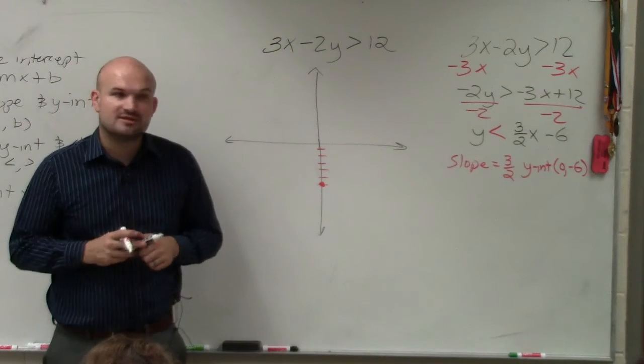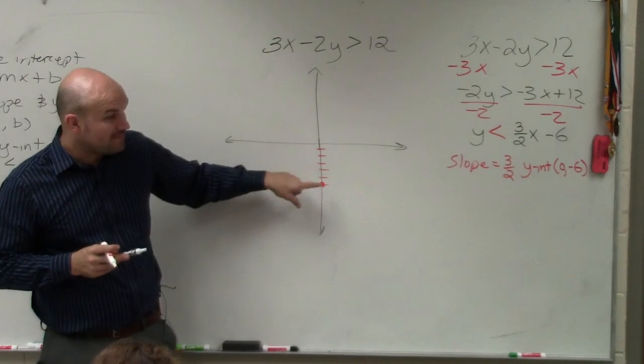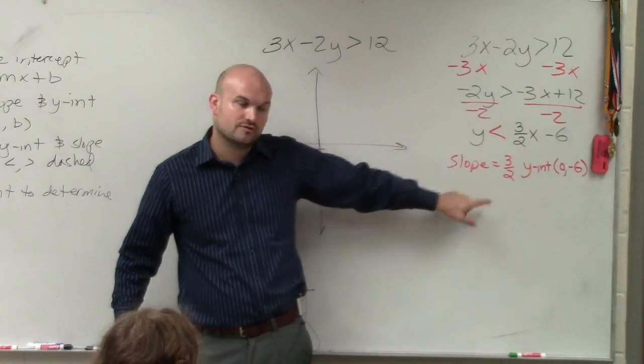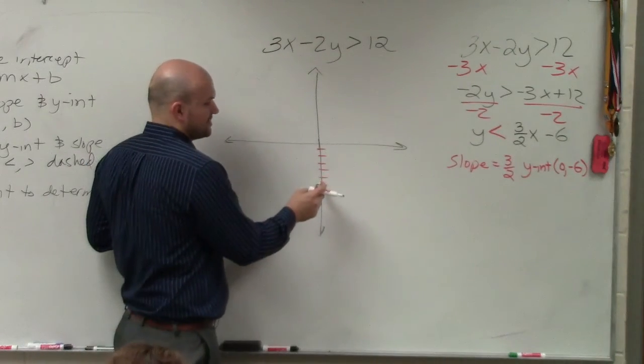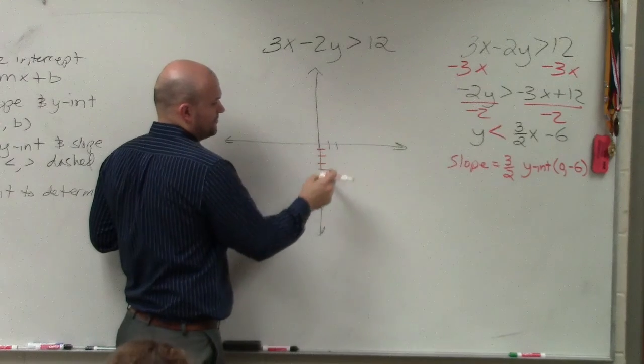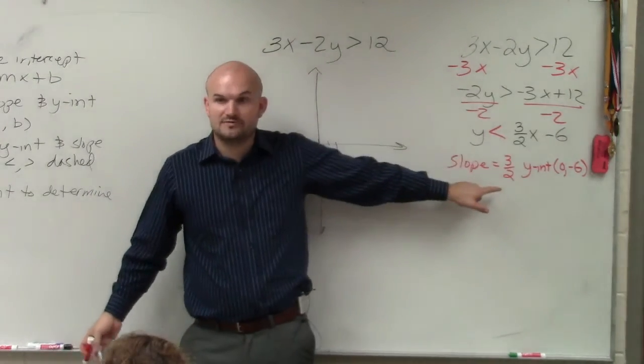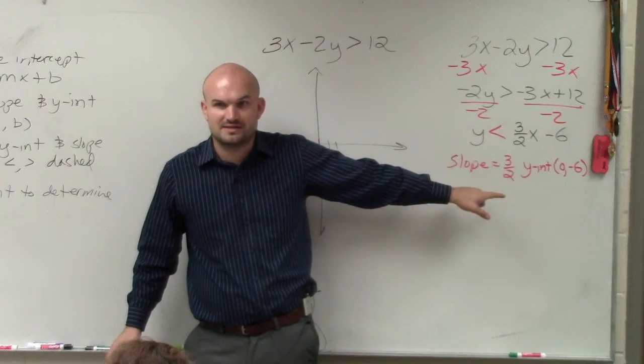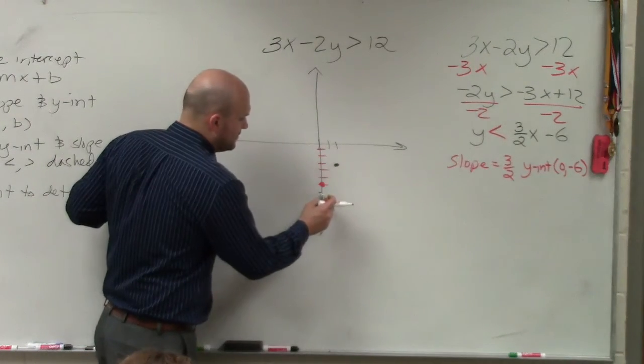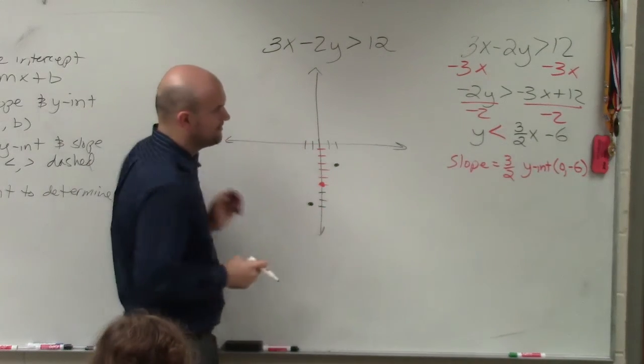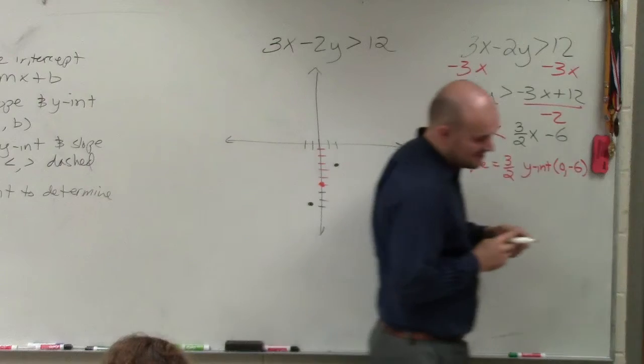Then we can use the slope to find the next point. So from my y-intercept, I can rise 3, go over 2 in the positive direction, 1, 2, 3, over 2. I could also do negative 3 over negative 2. Would you guys agree with me that negative divided by negative is the same as a positive? So you could also go negative 3, 1, 2, 3, to the left 2. But it's not really necessary, at least in this example.